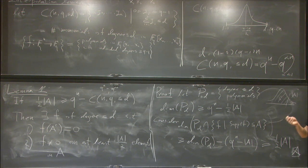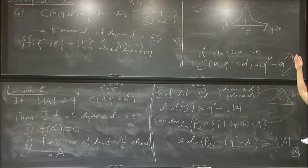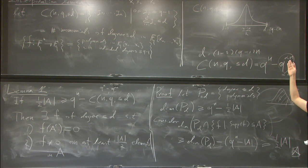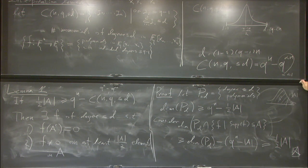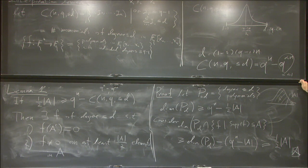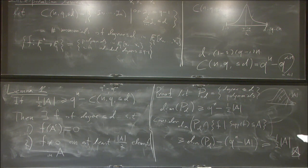It might seem suspicious because we're using degrees almost all the way to the maximum, yet we claim the matrix has low rank. That's the second lemma — the low rank lemma.